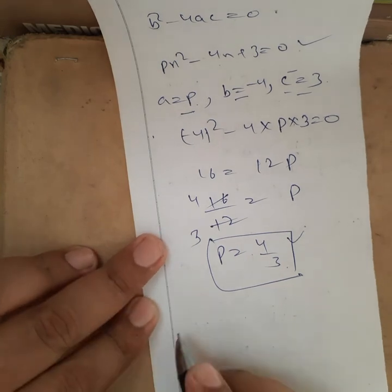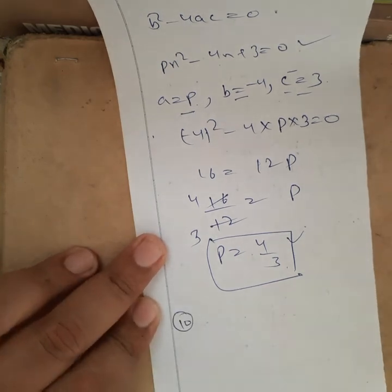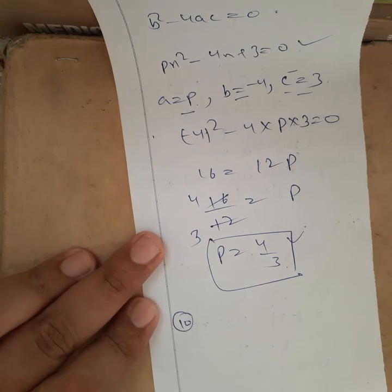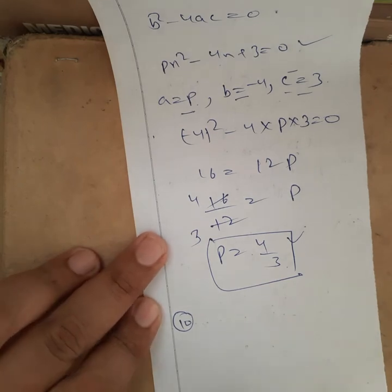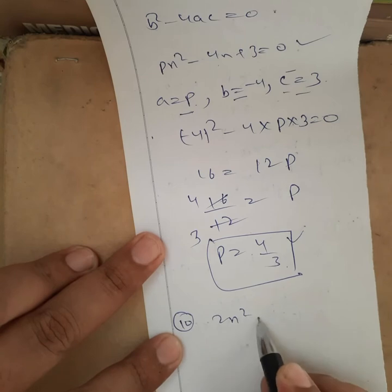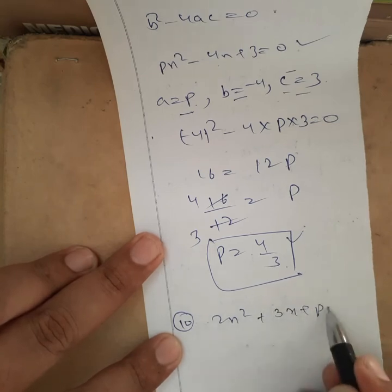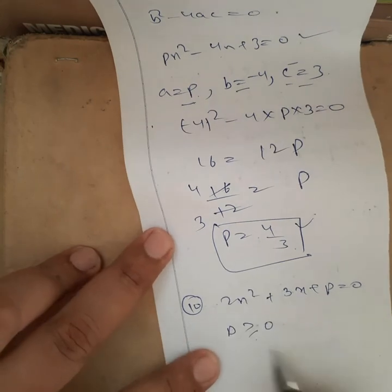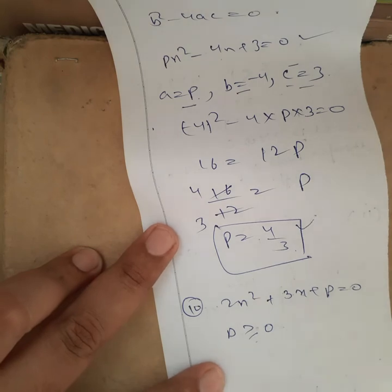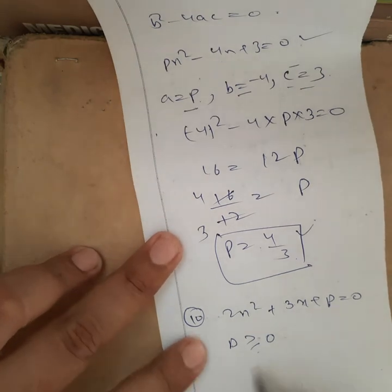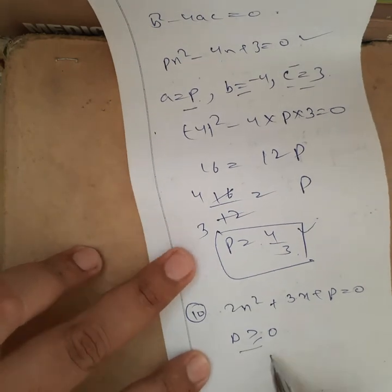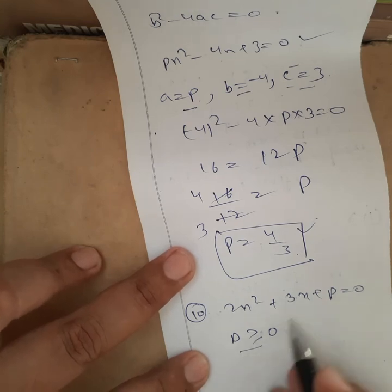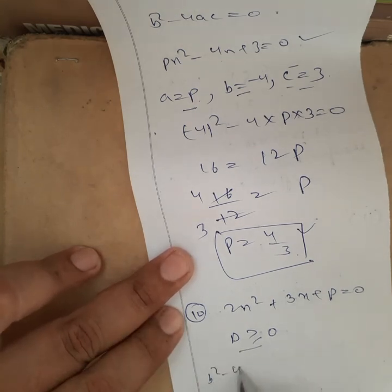Now look at question number 10. Find the values of p for which the quadratic equation has real roots: 2x² + 3x + p = 0. Now for roots to be real, D should be greater than or equal to 0. That is your condition. In both cases we will get real roots. So D = b² - 4ac ≥ 0.